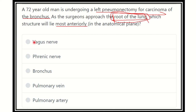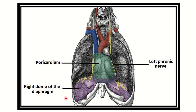Here are the options: the vagus nerve, phrenic nerve, bronchus, pulmonary vein, and pulmonary artery. We have to find out which of these structures lies most anteriorly in this plane.